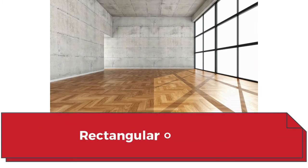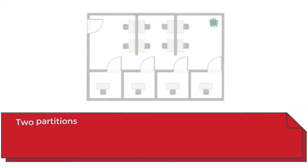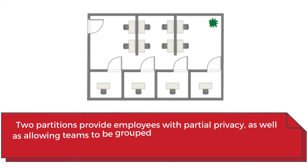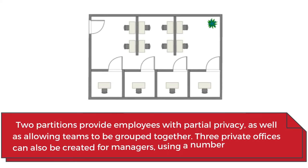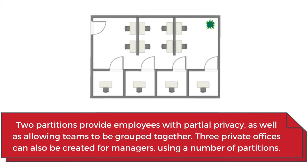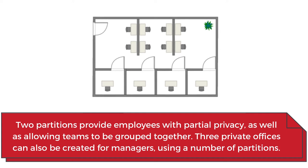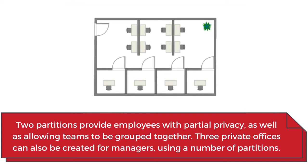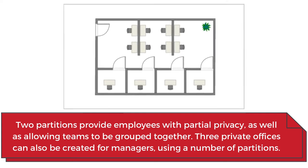Rectangular office. Two partitions provide employees with partial privacy, as well as allowing teams to be grouped together. Three private offices can also be created for managers, using a number of partitions.